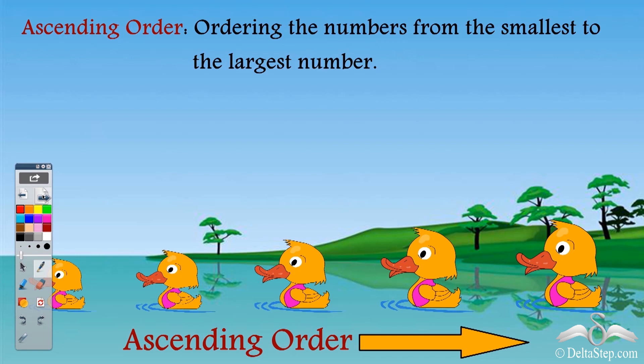Ascending order means ordering the numbers from the smallest to the largest number, just like these ducks are ordered or arranged from the smallest duck to the largest duck.